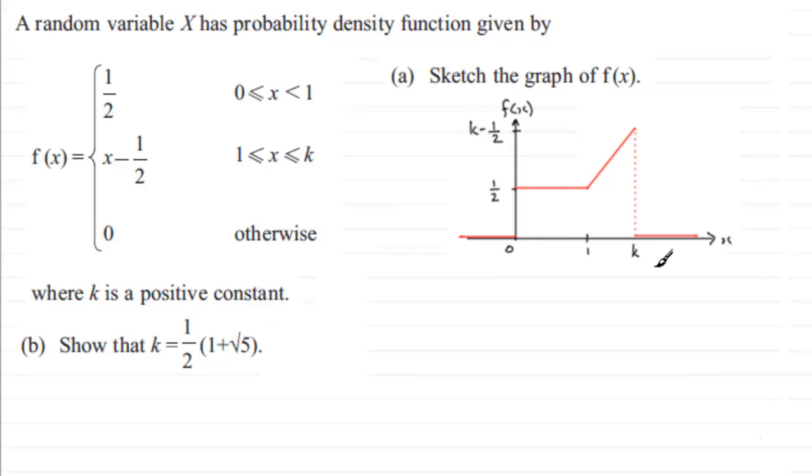Now in the first part, we sketch the probability density function f of x. And so how do I get the value of K? Well, we should be familiar with the fact that the area under the whole of the probability density graph should total 1, because it represents all the probabilities.